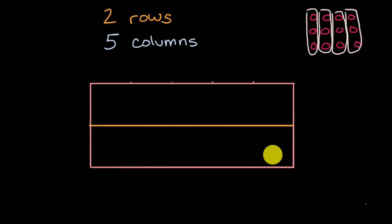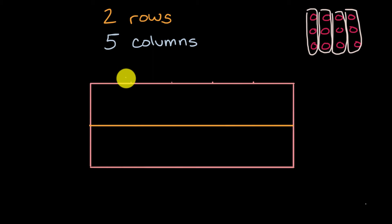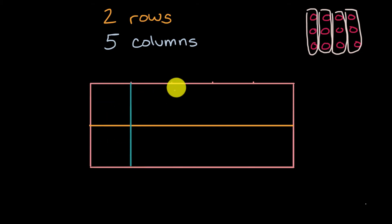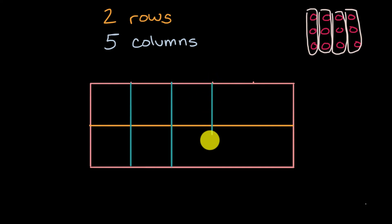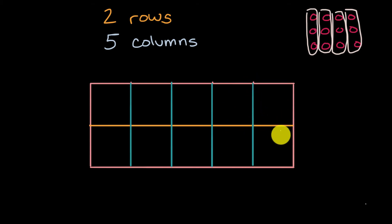Pause the video — you could draw this if you have a pencil and paper with you, or just think about what I should do. How would I now divide this rectangle into five columns? What I could do is make a bunch of lines that go from top to bottom. So that's one column, a second column, a third column, a fourth column, and a fifth column.